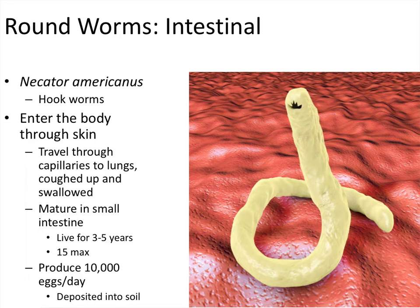The hookworm then matures in the small intestine, where it typically lives for three to five years — though some can live up to 15 years. It hangs out in the small intestine, using the nutrients you take in through food to grow. It will produce about 100,000 eggs per day that are deposited into the soil or a sewage system, and then the cycle can start again.